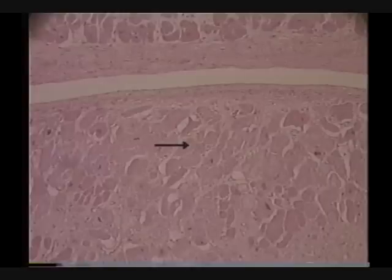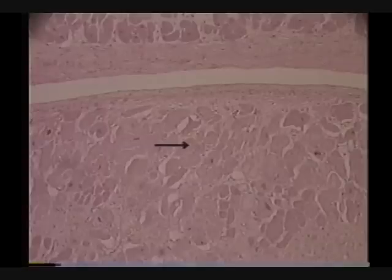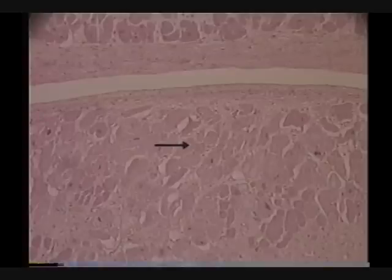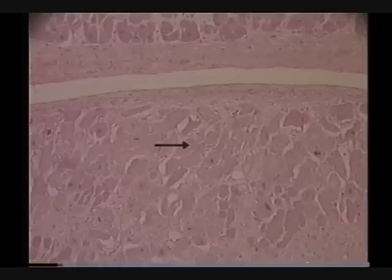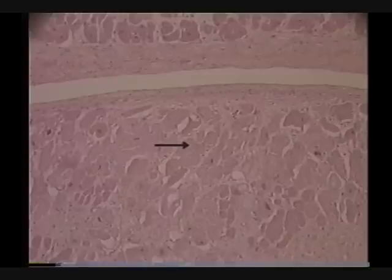The Purkinje fibers. Their function is to conduct the action potential. They're larger, and they conduct the action potential more rapidly and more efficiently than standard myocardial cells. So they're modified myocardial cells — essentially the same cells as the muscle, except they're a little larger and they conduct better. So they ensure that the impulse gets through the heart structure itself with appropriate timing.